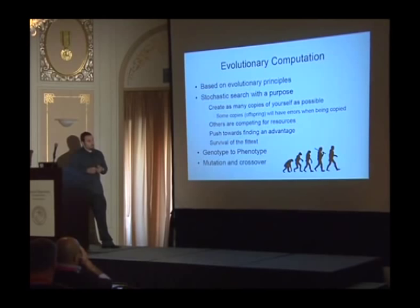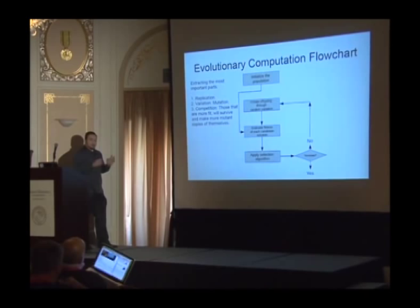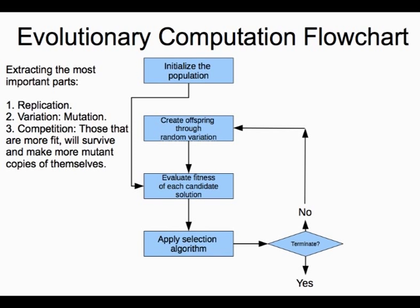In evolutionary computation, we have a large population; they're all competing and performing. Some agents will be better at the particular problem for which they're competing. Those agents will be selected with greater probability than their competitors, and we allow them the chance to create offspring — basically variations of themselves. In this manner, we loop through the algorithm, creating better and better agents.